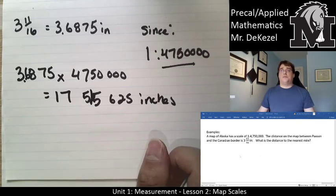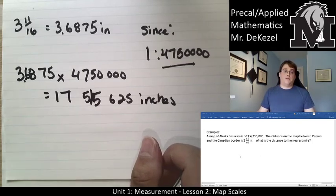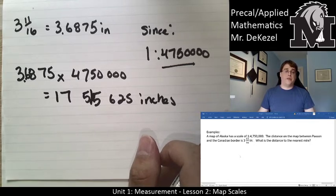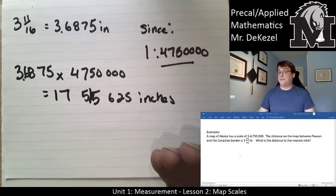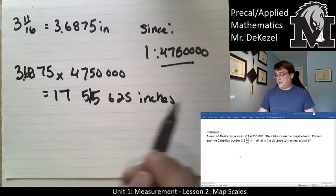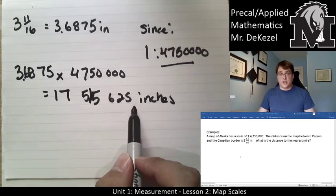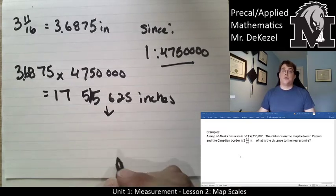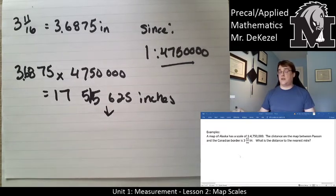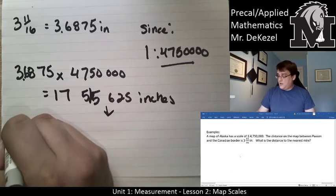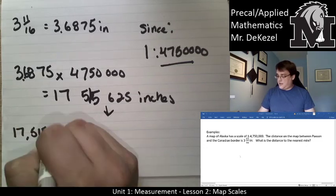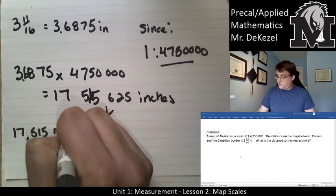If I was to tell you from Winnipeg to Brandon it is 24 million inches, that wouldn't really help you, right? So we want to take the number of actual inches it is and we want to turn that into miles. How do we turn that into miles? We go back to our previous lesson and we write our conversion factors with what we want on the top and what we have on the bottom. So we've got 17,515,625...